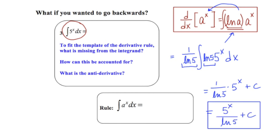Now let's generalize this: if we're trying to take the antiderivative of an exponential function whose base is not e, we're going to end up getting a restatement of the integrand divided by the natural log of the base, plus c. So in this video, we learned how to differentiate and integrate exponential functions with a base other than e.